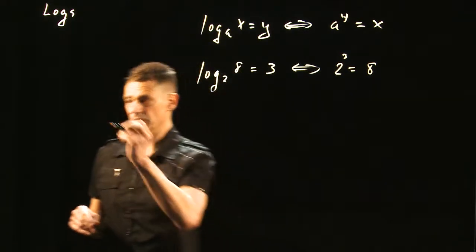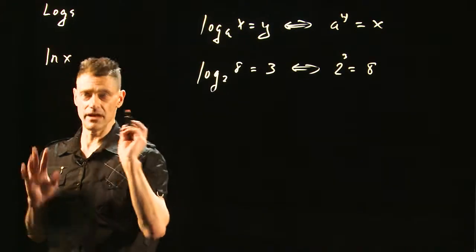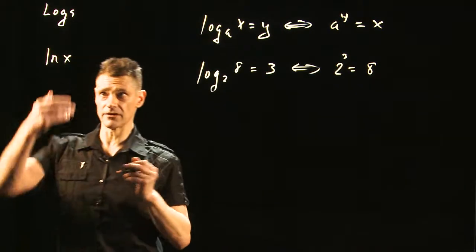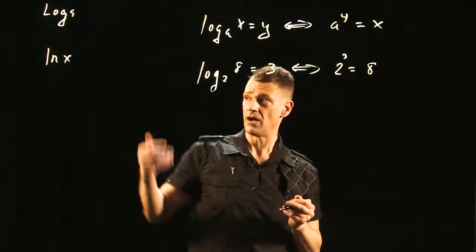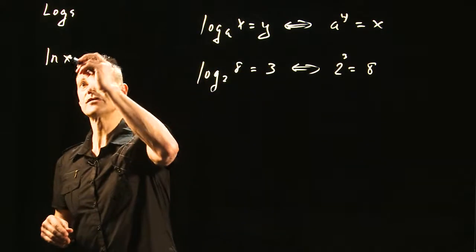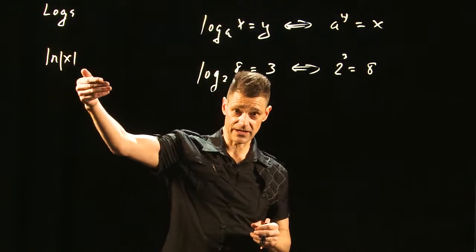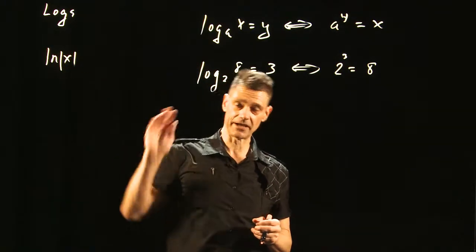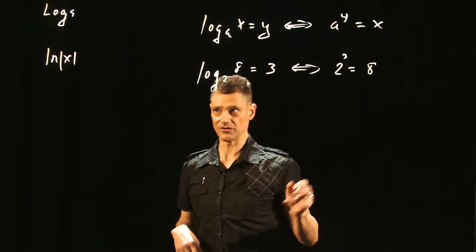And so this notation, ln x, one of the things that you need to know is that logarithms are defined only for positive real numbers. I'll show you a picture of the graph eventually, but typically there's an absolute value there, because there are no logarithms of negative numbers, not in the real number world.